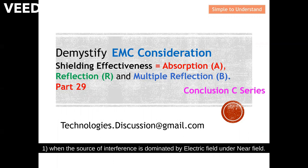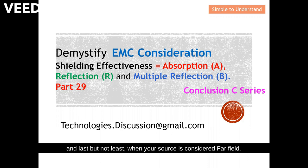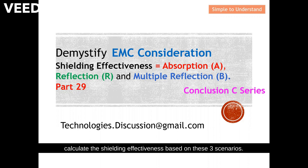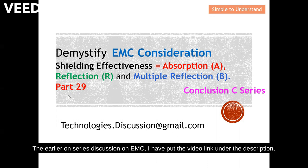The three scenarios are: number one, when the source of interference is dominated by electric field under near field; number two, when the source of interference is dominated by magnetic field; and last but not least, when your source is considered far field. Today we're going to look at how to calculate the shielding effectiveness based on these three scenarios. This is part 29 of the EMC series.